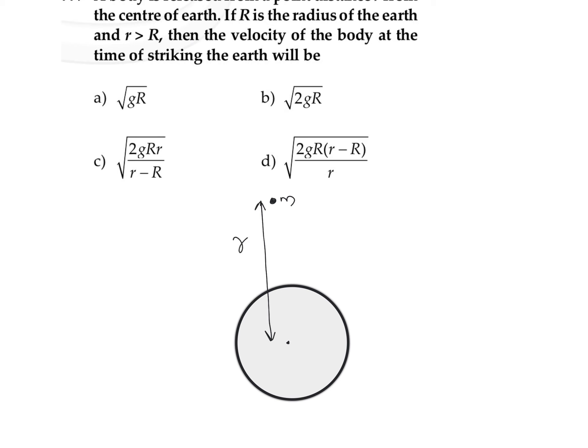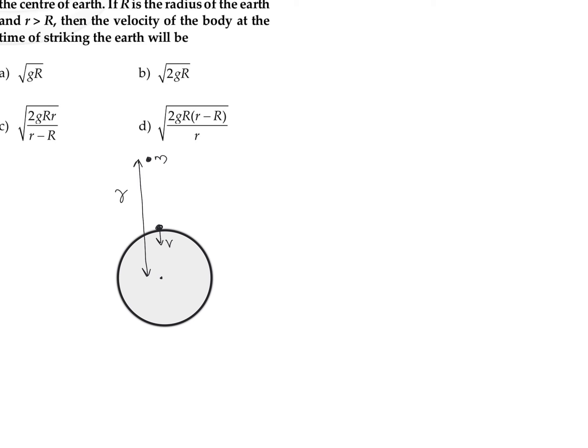Due to the gravitational force exerted by the Earth, this object is going to move towards the Earth, and after some time it is going to make a collision with the Earth's surface with a velocity v. Our aim is to find out the value of velocity v at the time of striking the Earth.